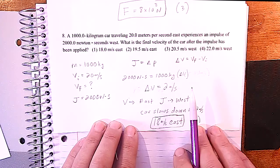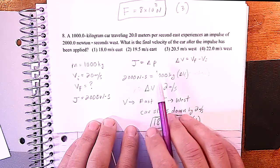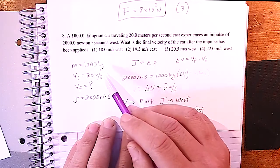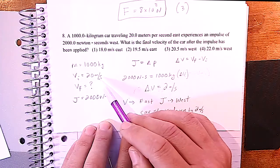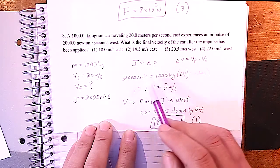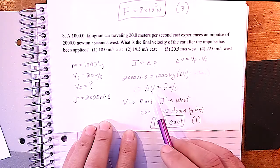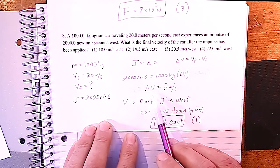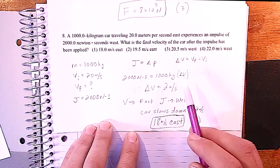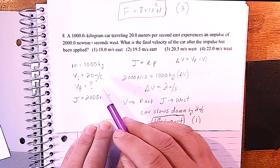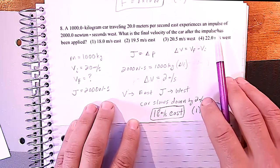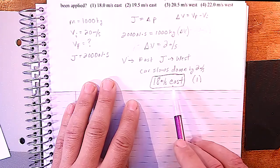This one is also an impulse/change-of-momentum problem, but it's a little trickier because they're looking for the final velocity. I wrote down all the information: mass, initial velocity, and the impulse. Since impulse equals change of momentum, we can find the change in velocity. The initial velocity was 20 m/s and the impulse acts in the opposite direction, so the car slows down. Final velocity is 18 meters per second to the east.